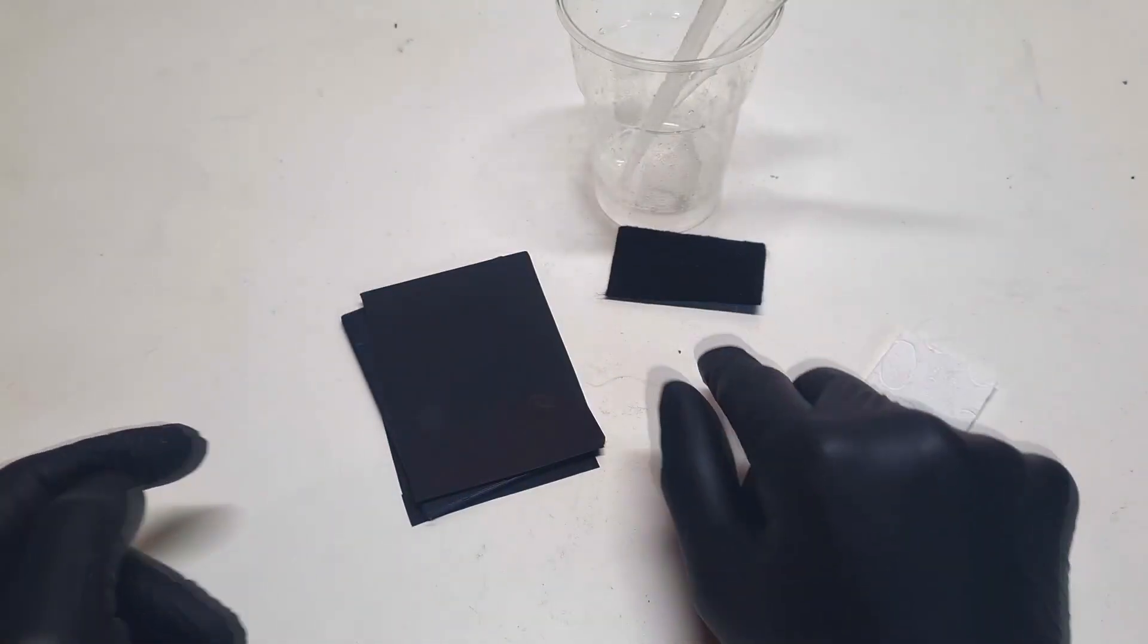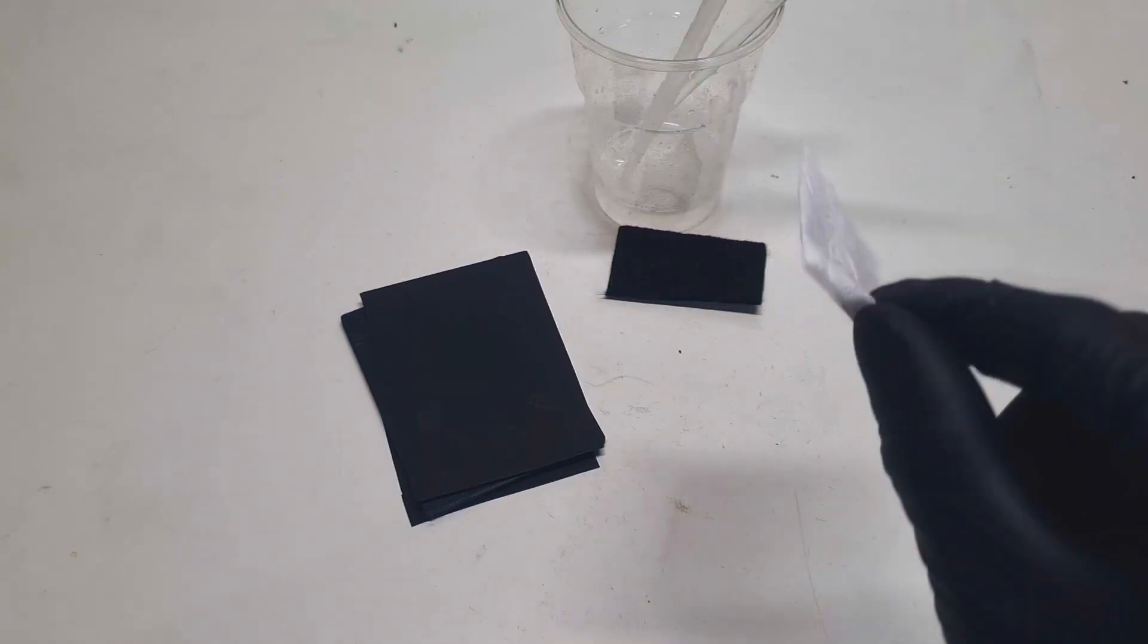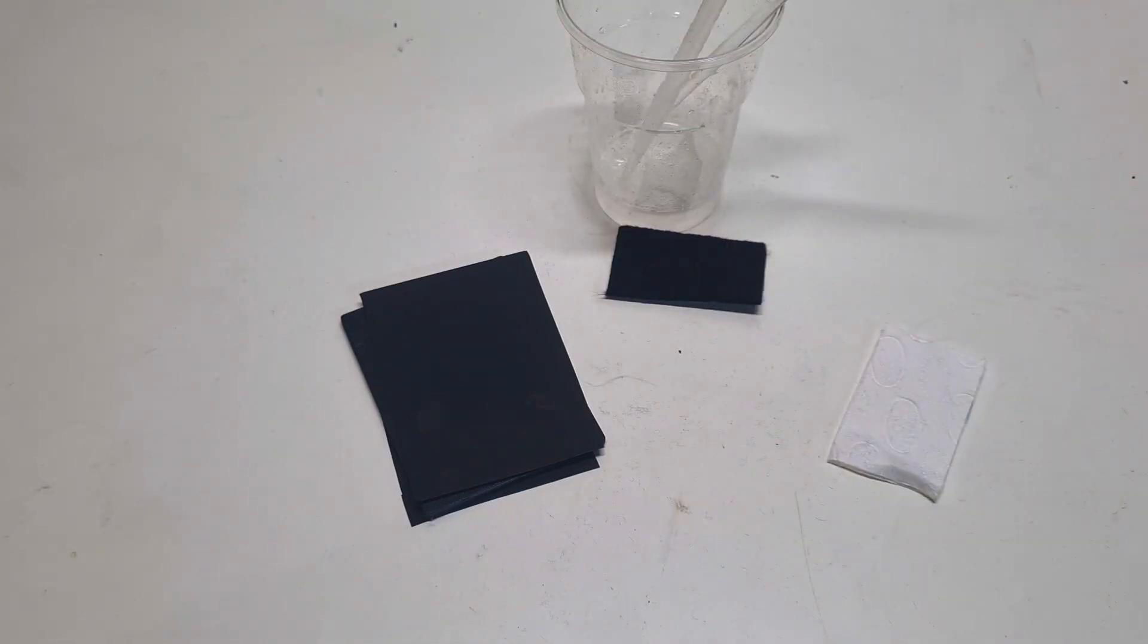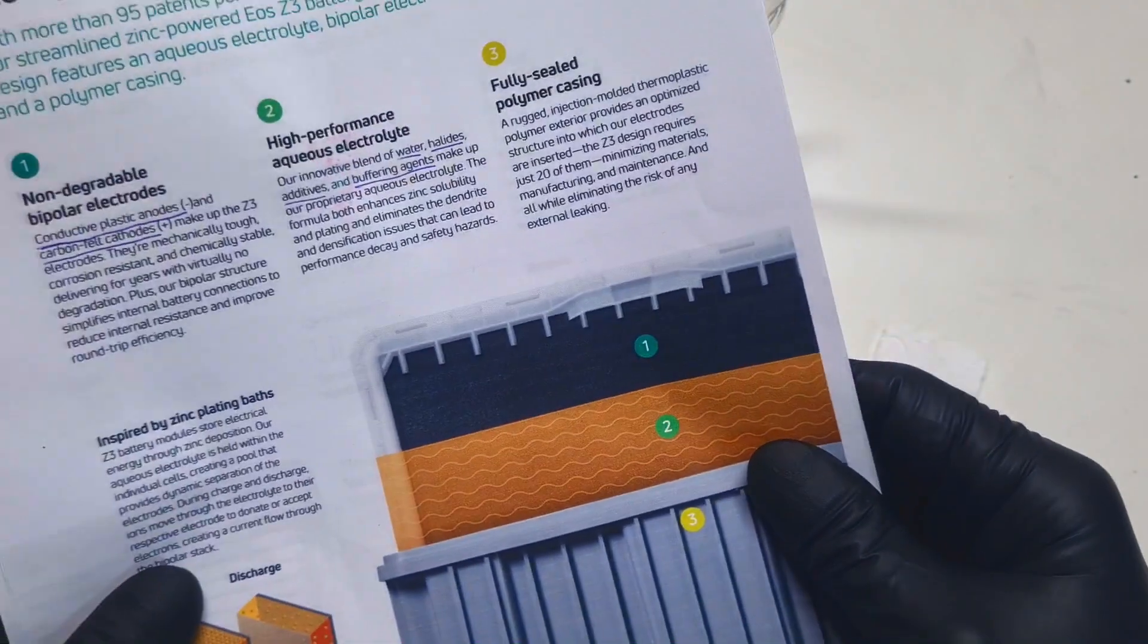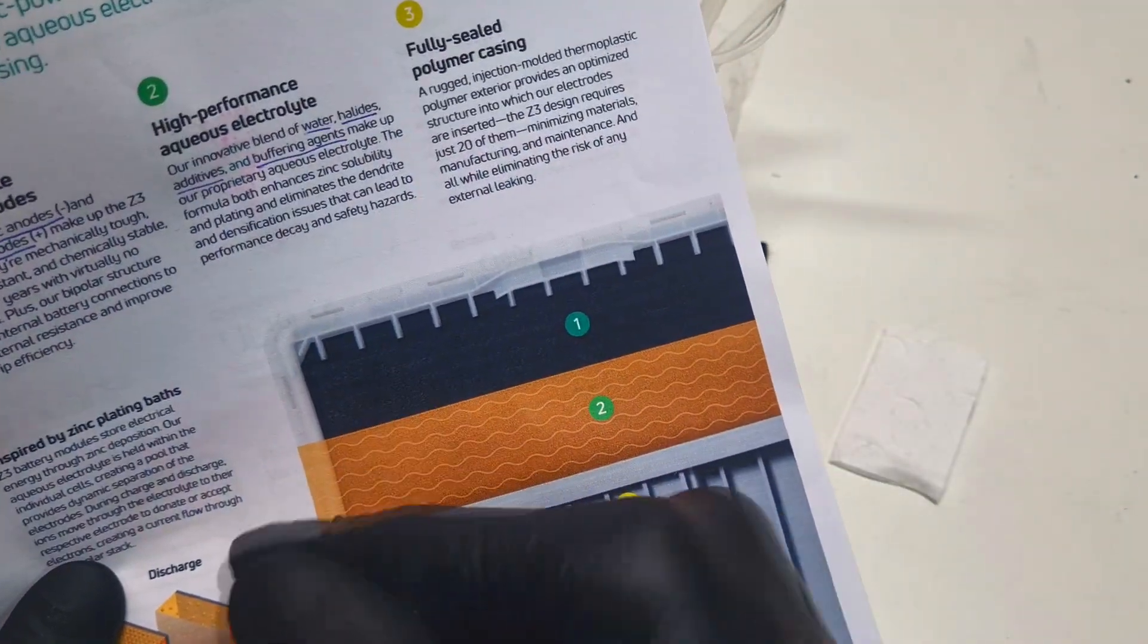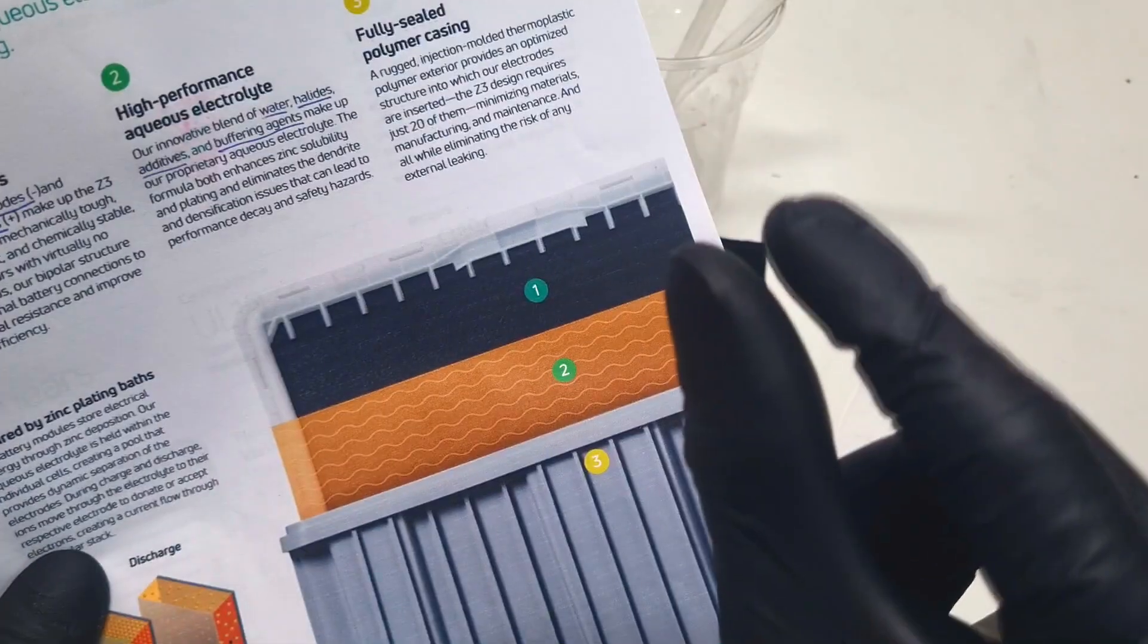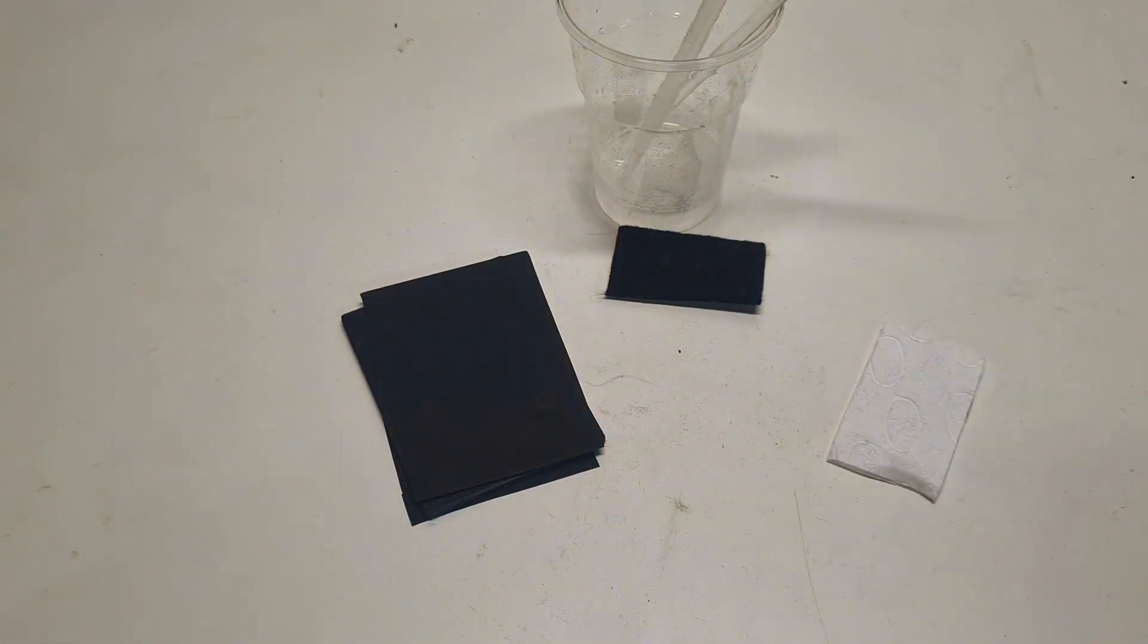The carbon felt and in this cell I will use some separator. Because I think that the EOS Energy company uses some grid. Or better to say the positive and the negative electrode is separated by some space. But like I said in my case I will use some separator.